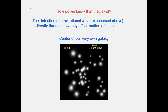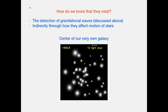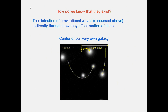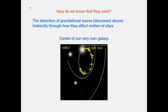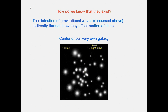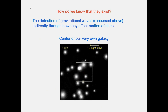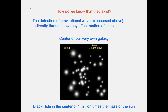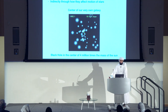How do we know black holes exist? One way is from the detection of gravitational waves. Another is indirectly through how they affect the motion of stars. For example, if you look at the center of our very own galaxy, you see something strange: stars much bigger than our sun going around something over the course of years — but there's nothing visibly there. The only thing that can be there is a black hole — and in fact, it's a black hole whose mass is 4 million times the mass of our sun.